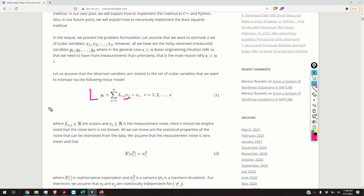So the least squares problem can be formulated as follows. Given the observed variables y1, y2 until ys, estimate x1, x2 until xn.